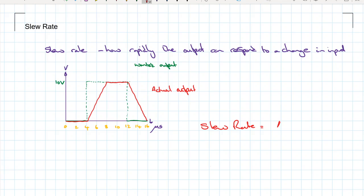Slew rate equals the change in output over the change in time, so effectively the gradient of the line. For this one here, our change in output then is going to be 10 volts, and its slew response is happening over four to eight microseconds, so over four microseconds. So we've got a slew rate of 2.5 volts per microsecond.